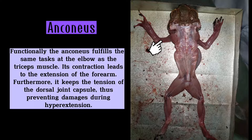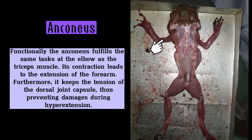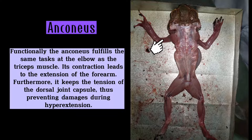Functionally, the anconeus fulfills the same tasks at the elbow as the triceps muscle. Its contraction leads to the extension of the forearm. Furthermore, it keeps the tension of the dorsal joint capsule, thus preventing damage during hyperextension.